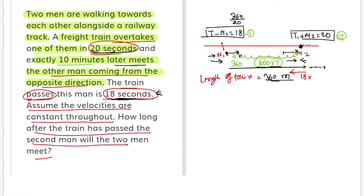18 into M2, so this distance will be 18 into M2. I will remove this data. 600 seconds after you meet M2, 18 seconds after you cross, so in 18 seconds this distance will travel. So this point is A, this point is B.